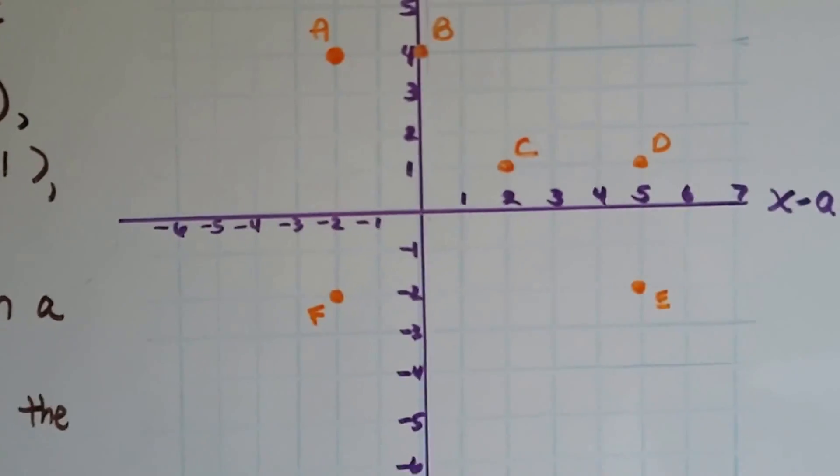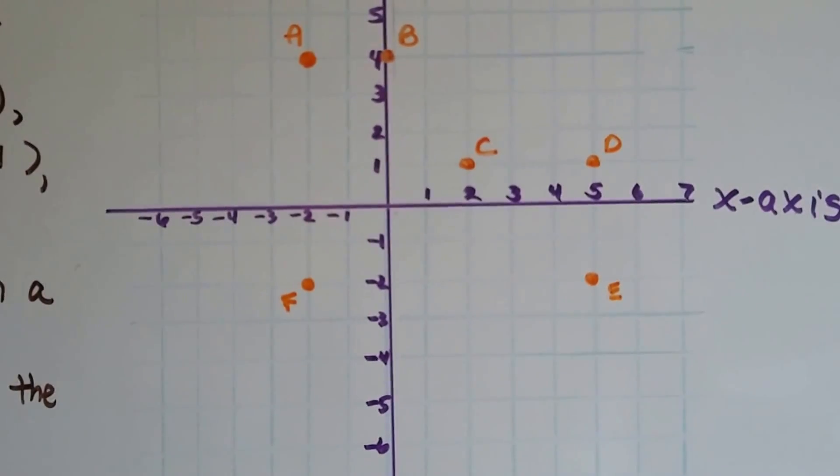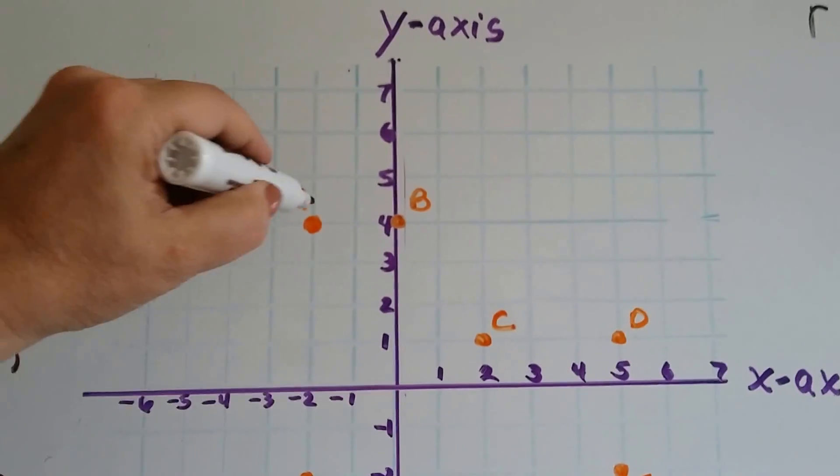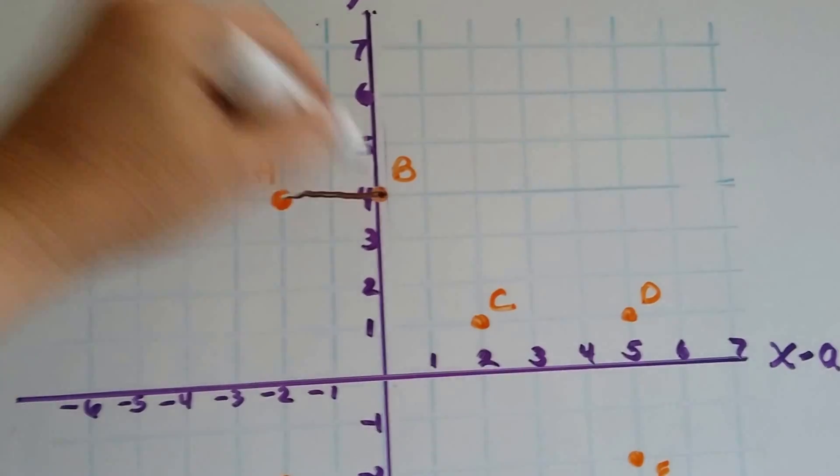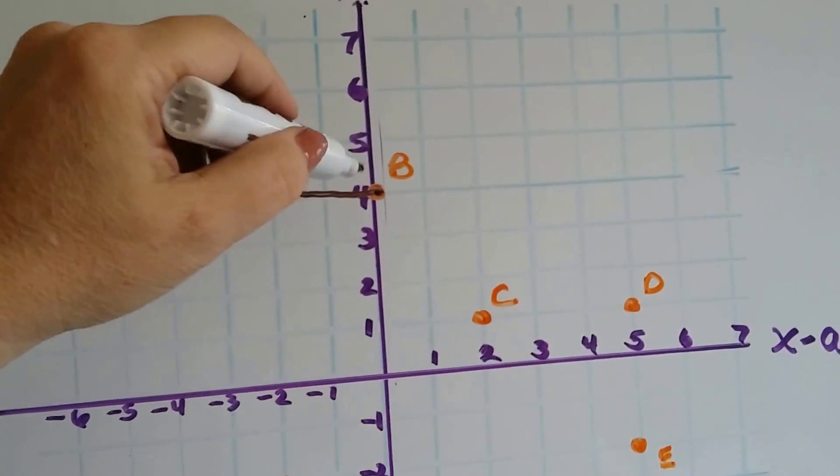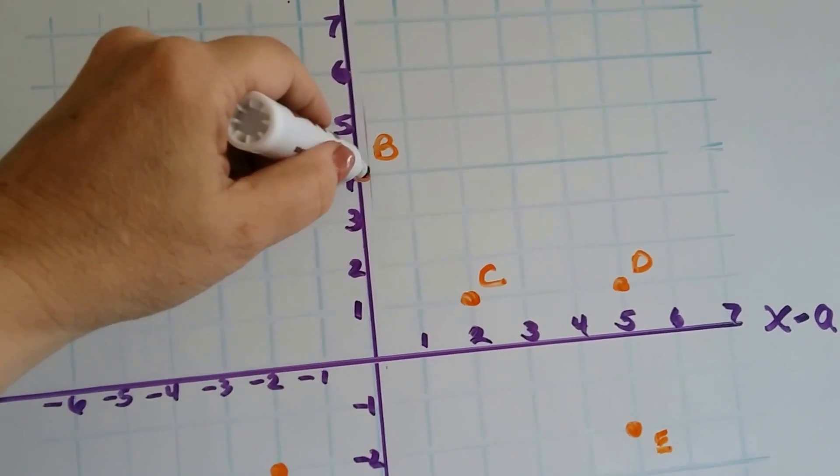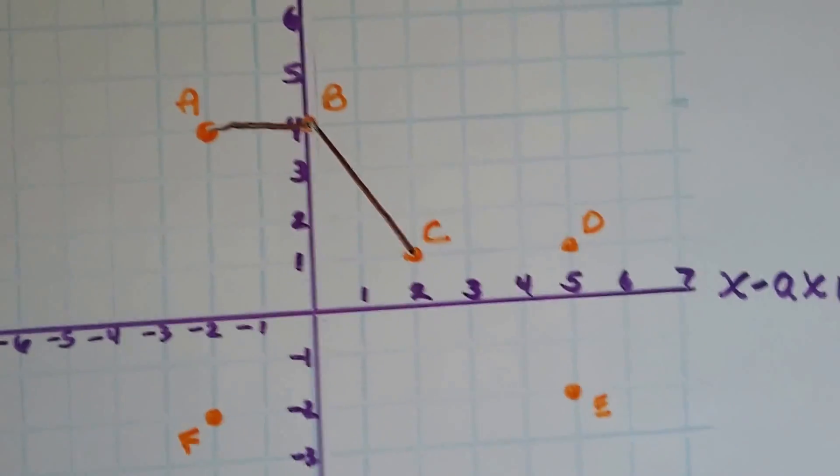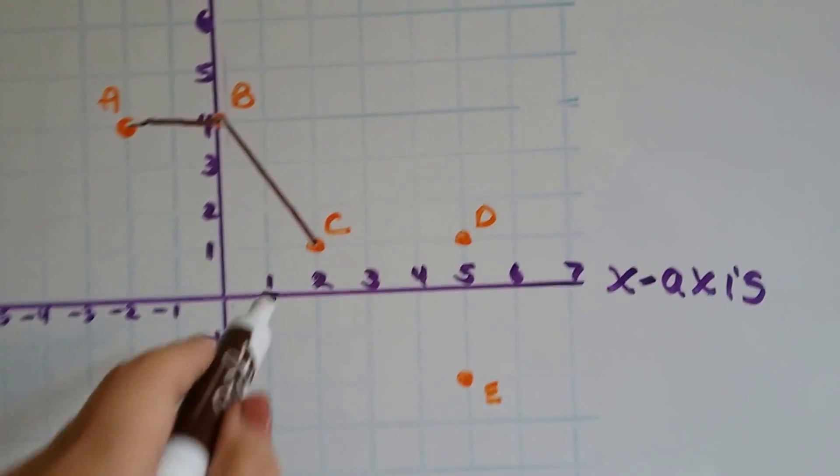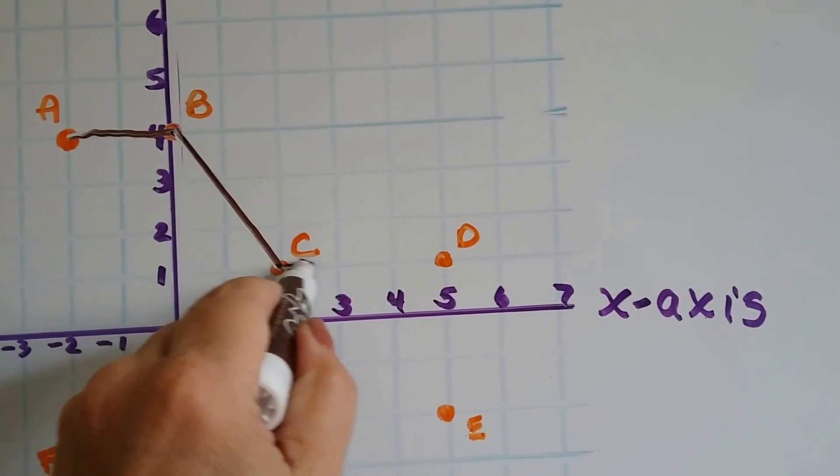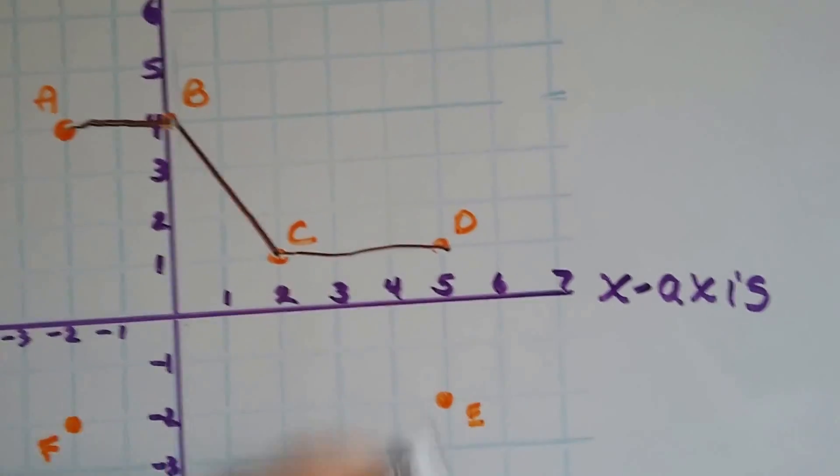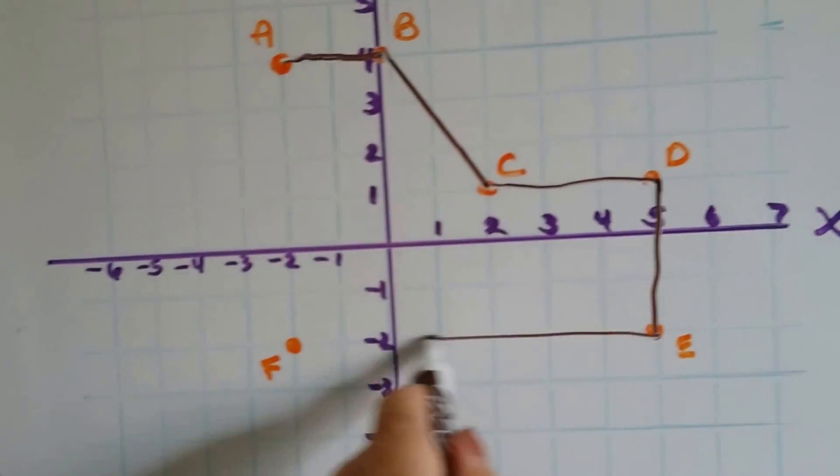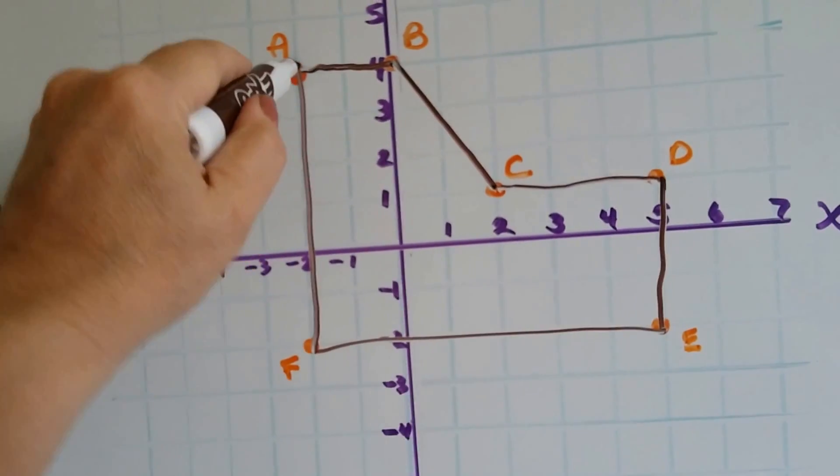So, now we've got all our points plotted on the coordinate plane. Now, we need to connect them and make a hexagon. So, A to B is right here, and then it's going to go down like this to C. You ever do connect the dots in grade school? C to D is there, D to E is there, and then E to F is here, and then F back to A.